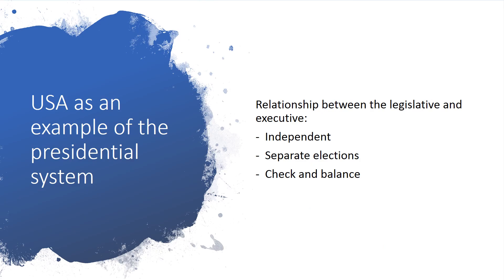To make things easier, we're going to use the United States as an example of the presidential system. We need to understand the relationship between the legislative and the executive. Both branches are important: the legislative branch forms laws, and the executive implements them. In the American presidential system, each branch is independent from the other — independent in terms of elections, in terms of domain of work, and in terms of check and balance.